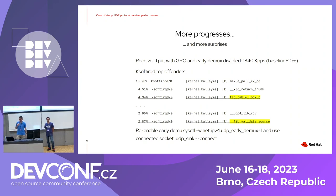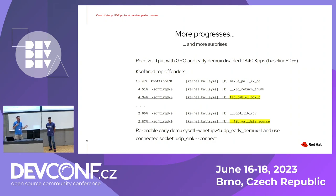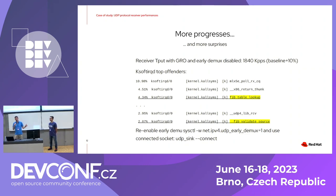The figures are not perfectly stable because power management is enabled on the host and kicks in at unexpected moments. However, repeating many tests, the trend is consistent: disabling GRO gives an improvement, and additionally disabling early demux gives another improvement.